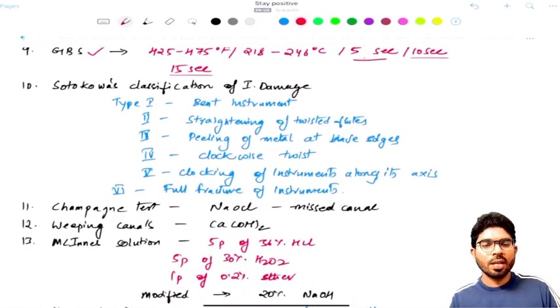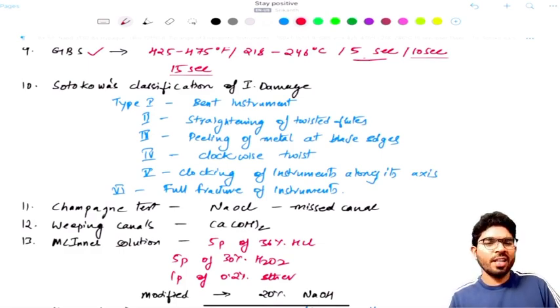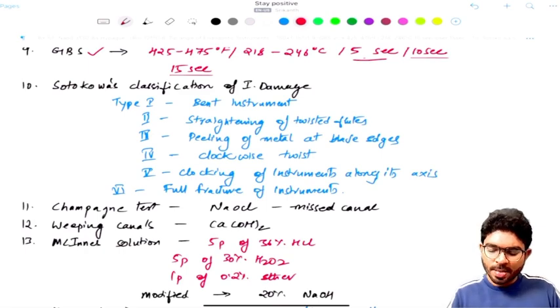So next one is, of course, we have discussed this so many times - that is the classification of instrument damage. So when you are repeatedly doing the biomechanical preparation with the same instrument, upon microscopic examination, you can clearly find the instrument damage, which is being classed into six classes.